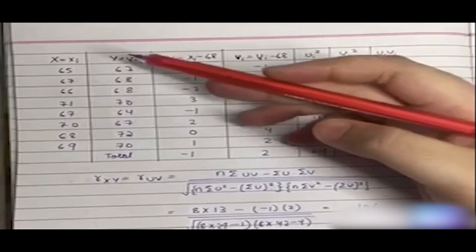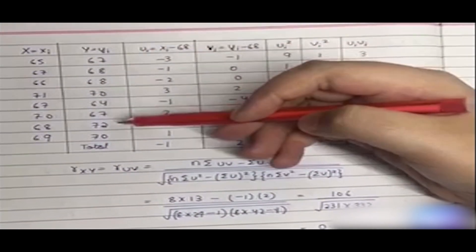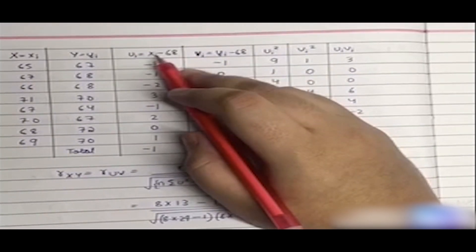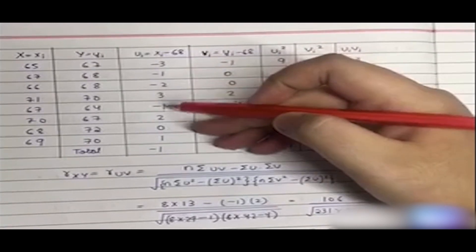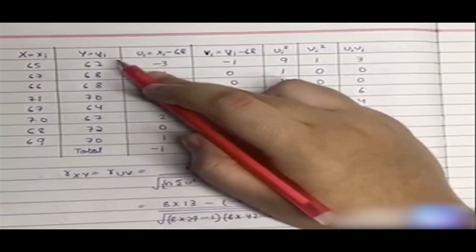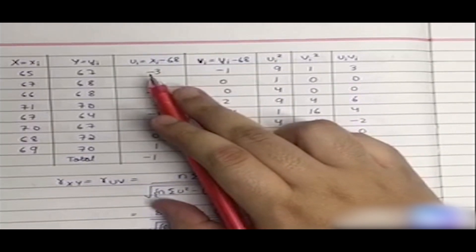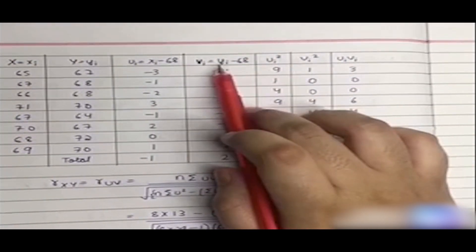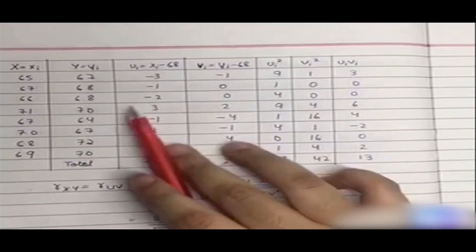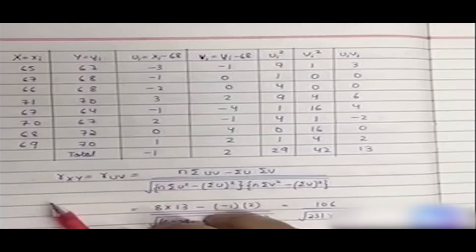Moving to the table of the solution: we have the x values given in the question and the y values. u_i = x_i − 68, so we subtract 68 from each value of x_i to get the u_i values. Similarly v_i = y_i − 68, subtracting 68 from each y_i. Then u_i² is the square of u_i, v_i² is the square of v_i, and u_i·v_i is the product of u_i and v_i. We calculate the totals of u_i, v_i, u_i², v_i², and u_i·v_i.